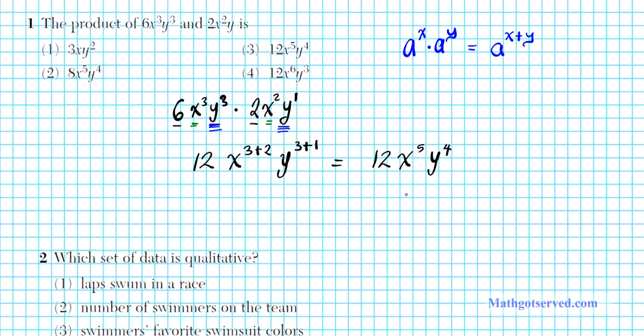Some common mistakes: students might multiply the exponents instead, so 3 times 2 is 6, 3 times 1 is 3, falling into trap number four. Another mistake is applying the product property to the coefficients, adding them instead of multiplying. When multiplying exponents of the same base, you only add the exponents. You multiply coefficients but add exponents. So 3 plus 2 gives 5, 3 plus 1 gives 4. The 6 and 2 are not exponents, so we multiply them: 6 times 2 is 12. The correct answer is option number three.